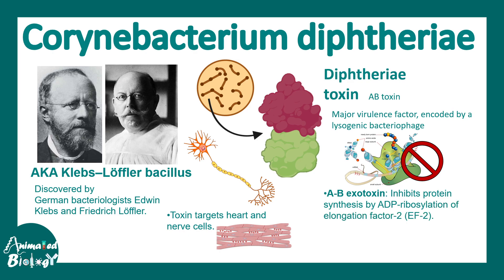The AB toxin is capable of interfering with the process of translation — that means the production of proteins. Every cell needs proteins: enzymes, transporters, channels — all of those are produced in the cell. If the production procedure is disrupted, cellular functionality would be compromised. It has to be understood that only strains of Corynebacterium diphtheriae infected with the bacteriophage can produce the toxin — not every strain can produce it.